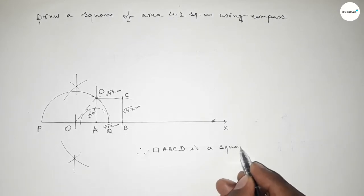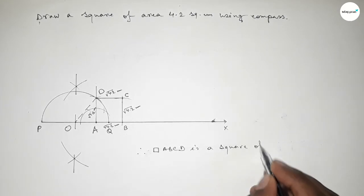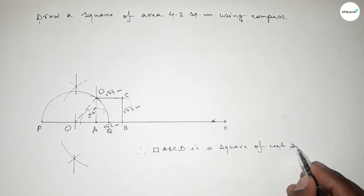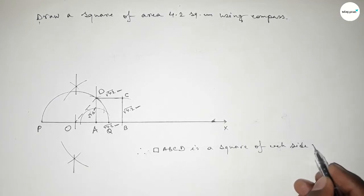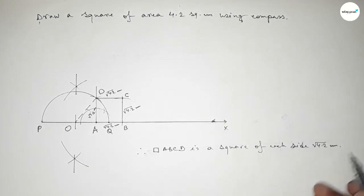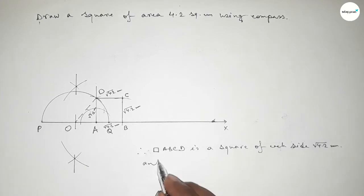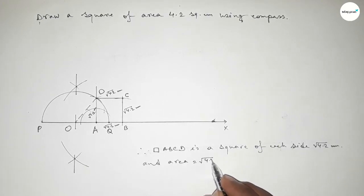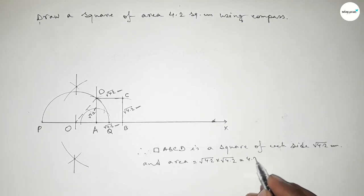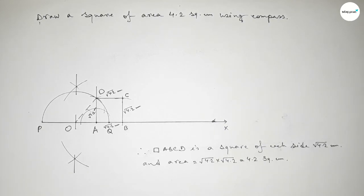The area of square ABCD equals √4.2 × √4.2 = 4.2 square centimeters. That's all — thanks for watching! If this video was helpful, please share it with your friends.